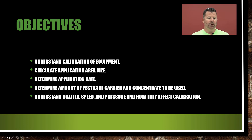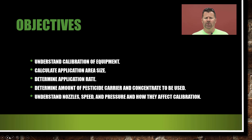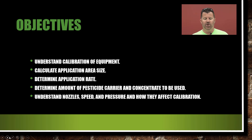We're going to understand the importance of calibrating our equipment. We're going to calculate application area size — why do we need to know the size of the area we're applying pesticides to? That's going to help determine how much pesticide we need. We're going to determine the application rate, the amount of pesticide carrier and concentrate to be used, and understand nozzles, speed, and pressure and how they affect calibration.